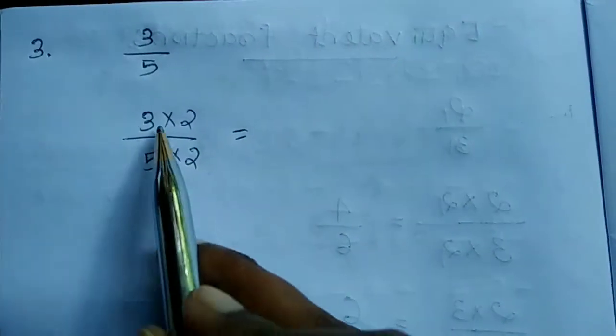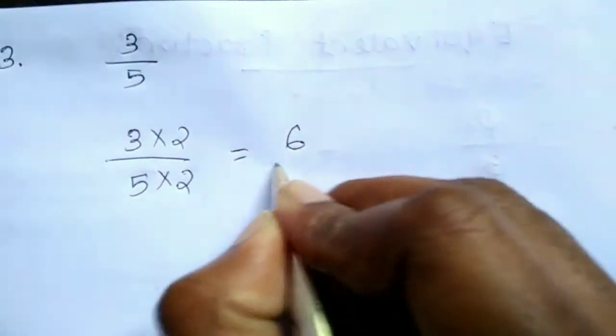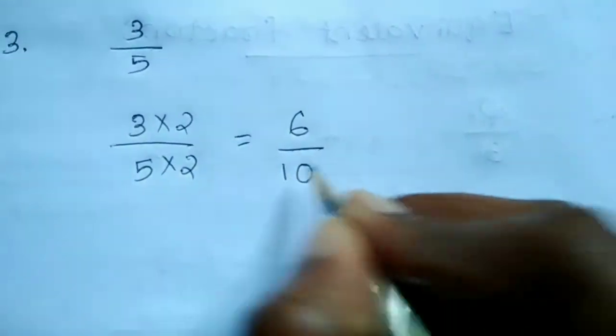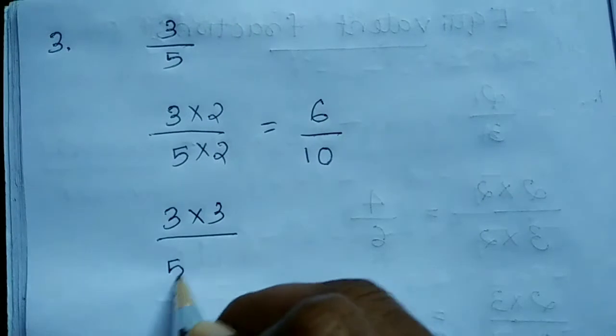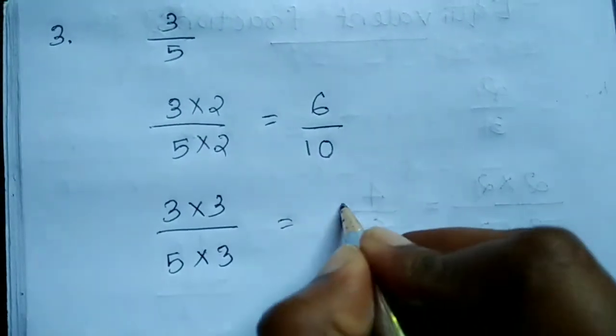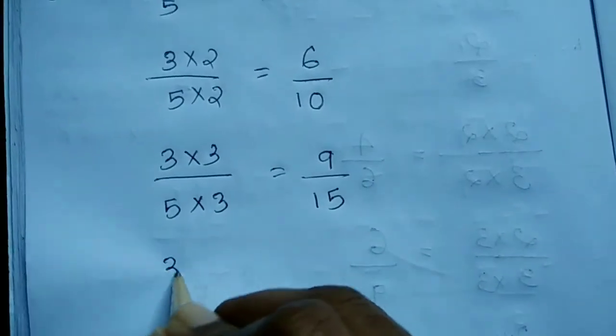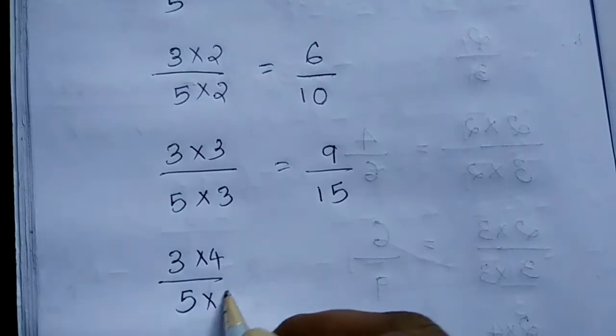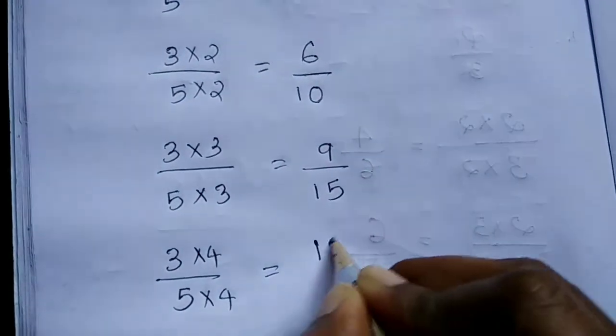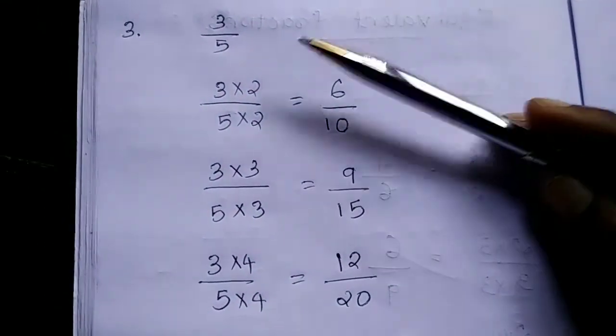3 by 5 is the given fraction. Multiplying numerator and denominator by the same number: 6 by 10 is an equivalent fraction of 3 by 5. Another equivalent fraction is 9 by 15, and multiplying by 4 gives 12 by 20. These are the equivalent fractions of 3 by 5.